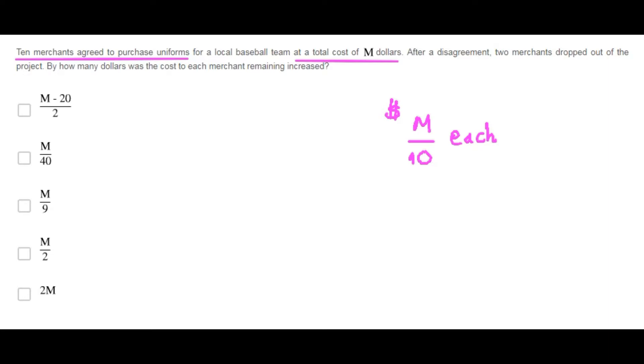However, two Americans dropped out of the project and therefore the remaining eight Americans were supposed to pay M over 8 dollars each.